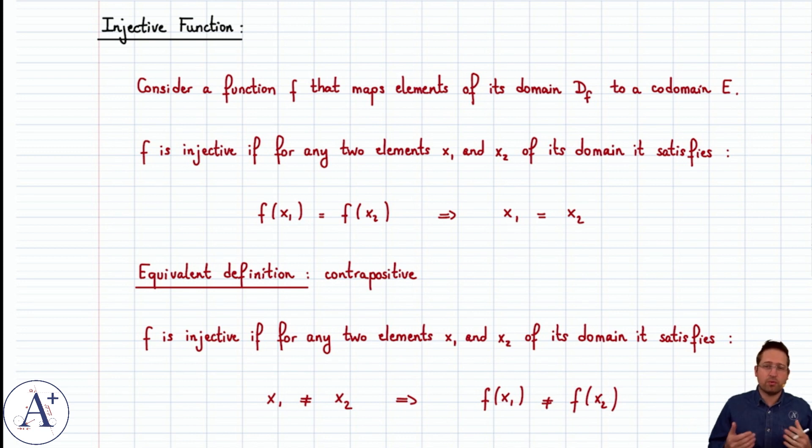Because if f of x1 were equal to f of x2, you'd have the same problem. You'd have one image that has two pre-images, and that's not allowed by the definition.